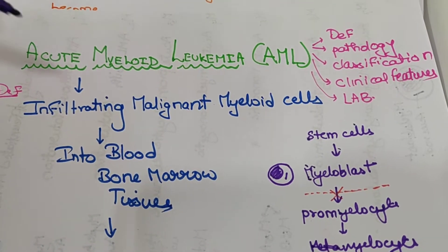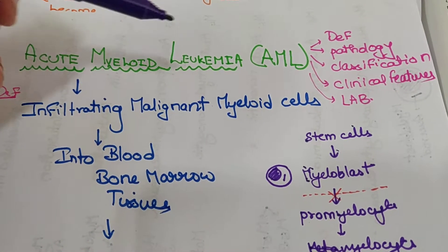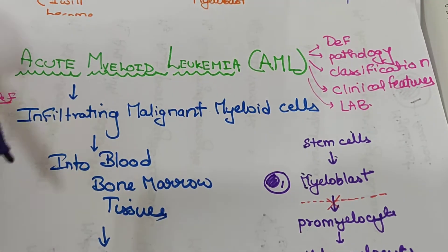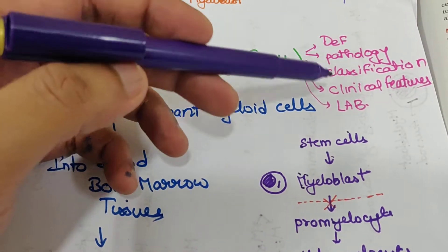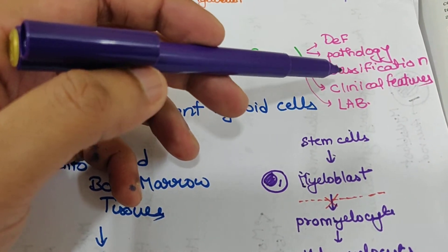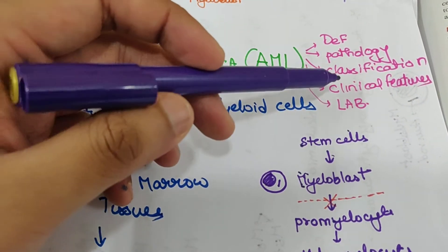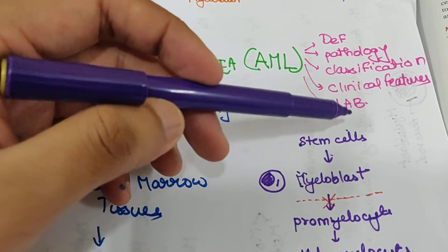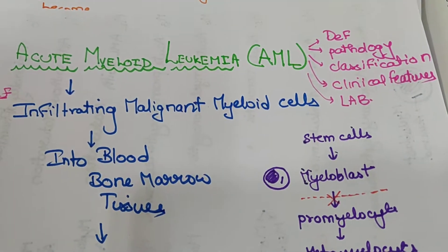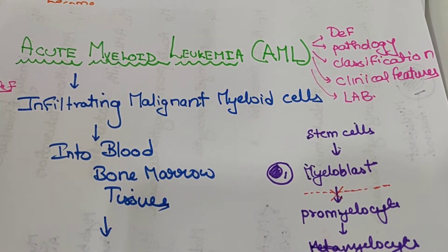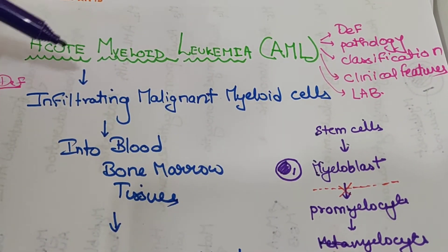This video is about Acute Myeloid Leukemia (AML). We will cover the definition, pathology, classification, clinical features, and lab diagnosis.